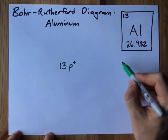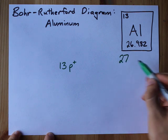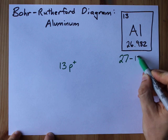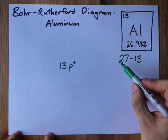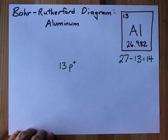My mass number of 27 is protons and neutrons combined. So if I take that 27 and take away the number of protons, 27 minus 13, I'm left with 14 for neutrons.